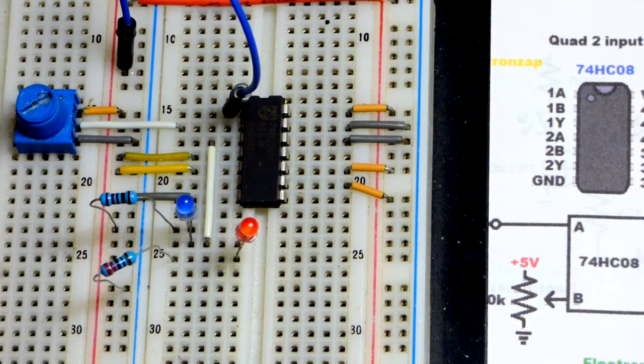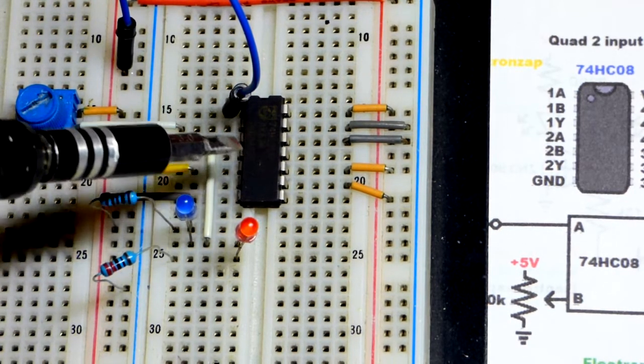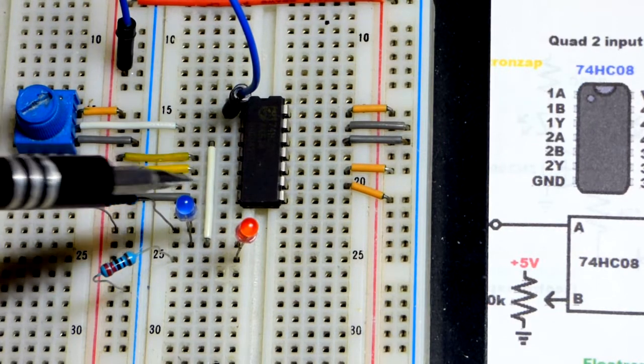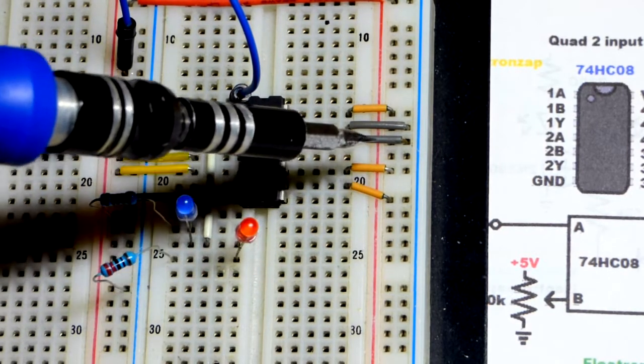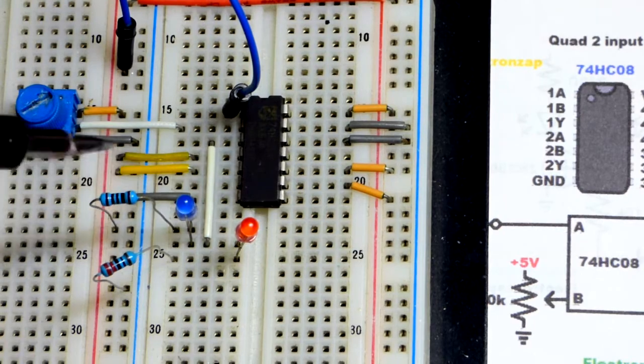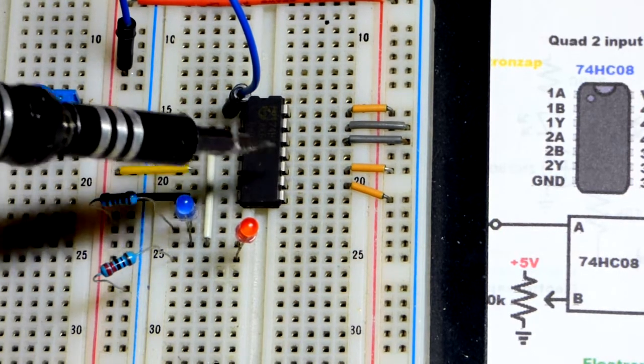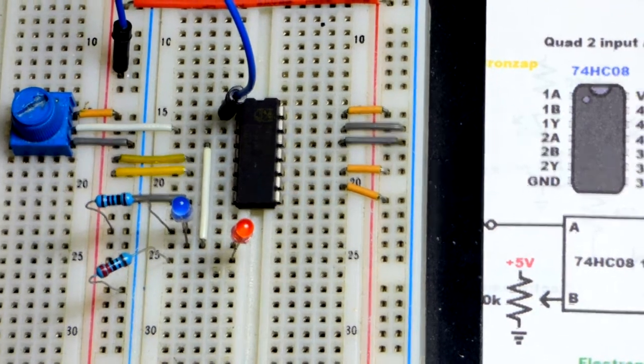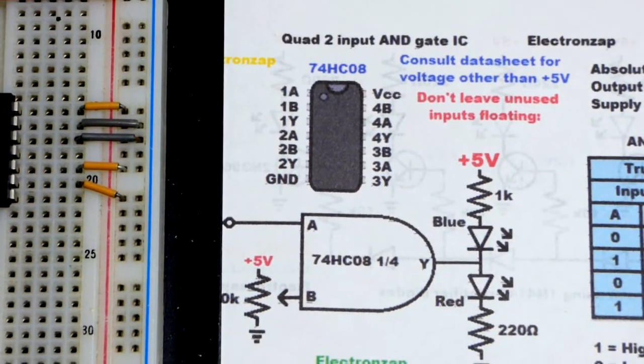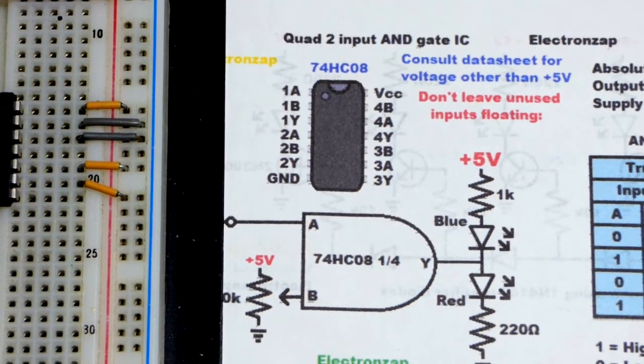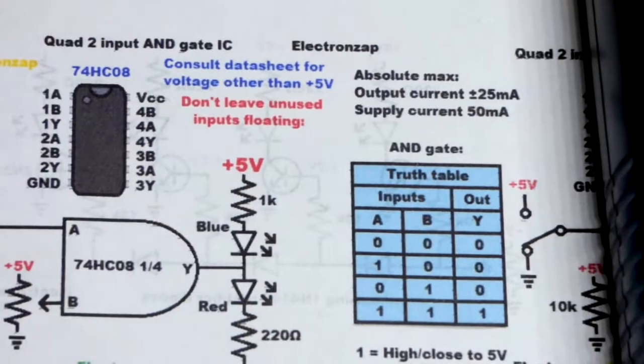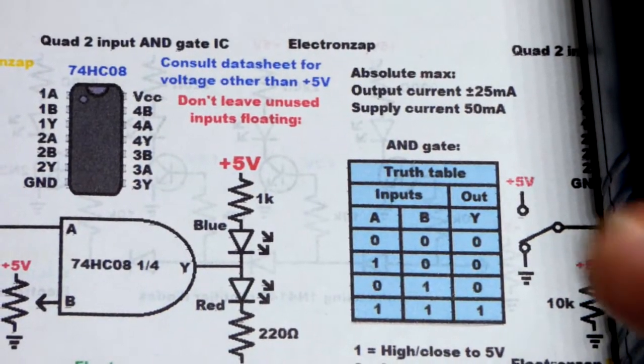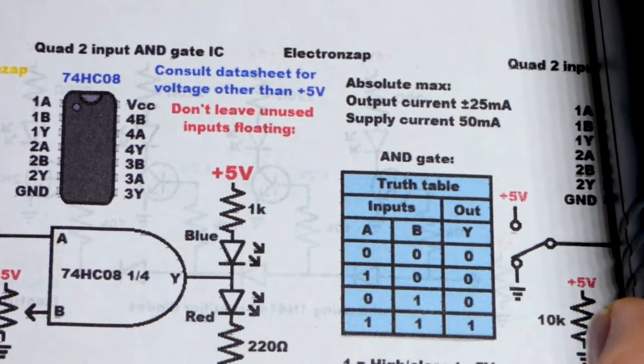But you want to give it a fixed voltage, otherwise it's picking up signals, voltages are hitting it from the air and that's affecting the output and it's consuming power, maybe causing other problems. So if you just tie them directly to a supply then the output holds steady and the component works better. I'm just going to mention that briefly, you can read more about other problems that you may have if you leave them floating.